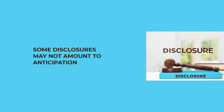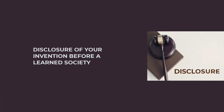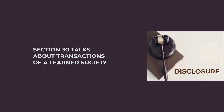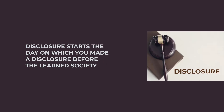Those disclosures will help you to extend the priority of your invention. So if you made a disclosure of your invention before a learned society, section 30 talks about transactions of a learned society. The Indian government recognizes that as a transaction of the learned society. And within one year, you follow it up with a provisional or a complete application. Your disclosure — and therefore your priority — starts from the day on which you made the disclosure before the learned society.